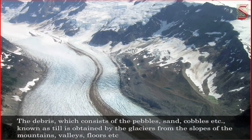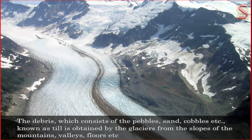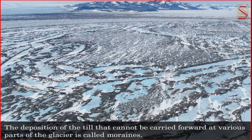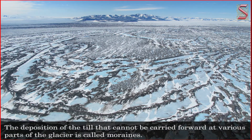The debris, which consists of pebbles, sand, cobbles, etc., known as till, is obtained by the glaciers from the slopes of the mountains, valleys, floors, etc. The till that cannot be carried further is deposited at various parts of the glacier. This deposition of till at various parts of the glacier is called moraines.